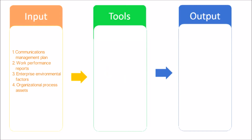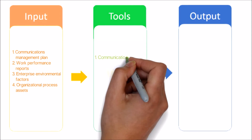Work Performance Reports are a collection of project performance and status information that may be used to facilitate discussion and to create communications. Additional inputs include Enterprise Environmental Factors and Organizational Process Assets.